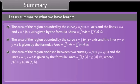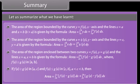The area of the region enclosed between two curves y = f(x) and y = g(x), and the lines x = a and x = b is given by the following formula: if f(x) ≥ g(x) in [a, c] and f(x) ≤ g(x) in [c, b], where a < c < b, then the area can be formulated accordingly.